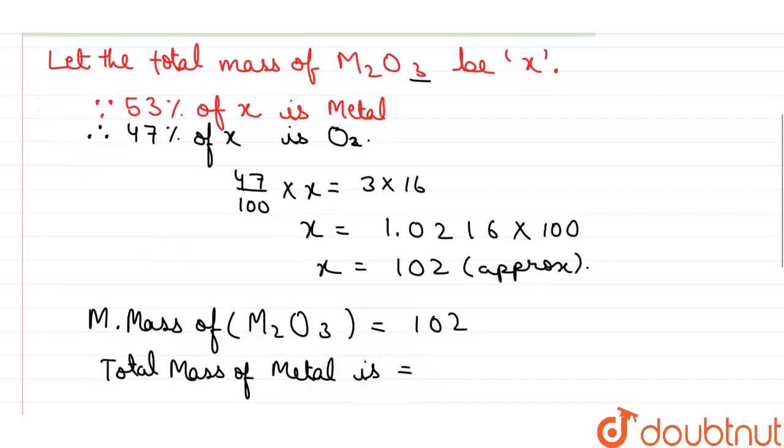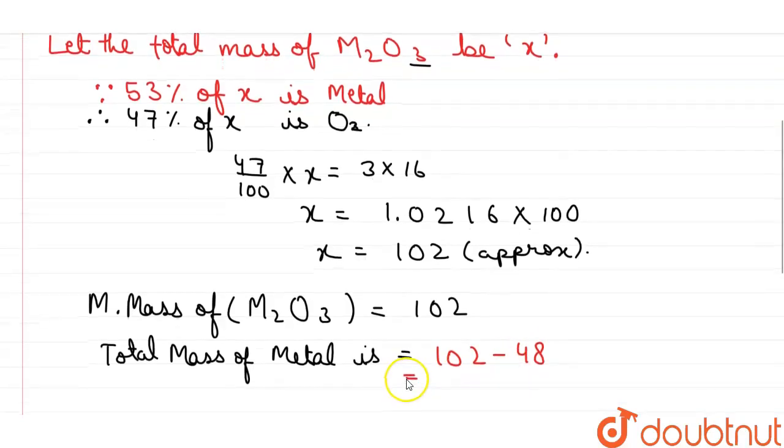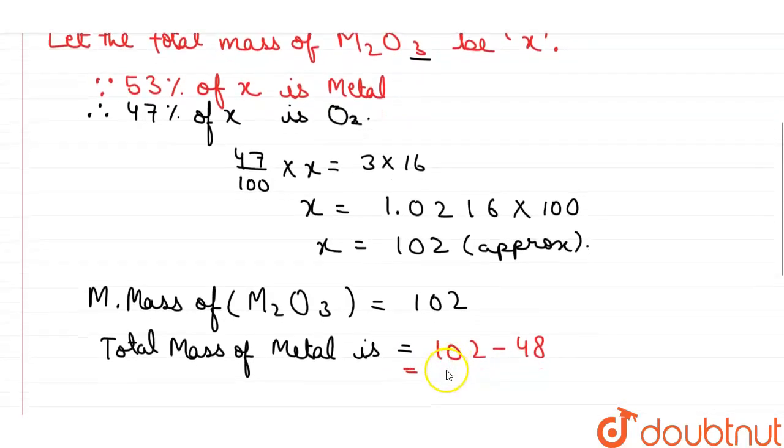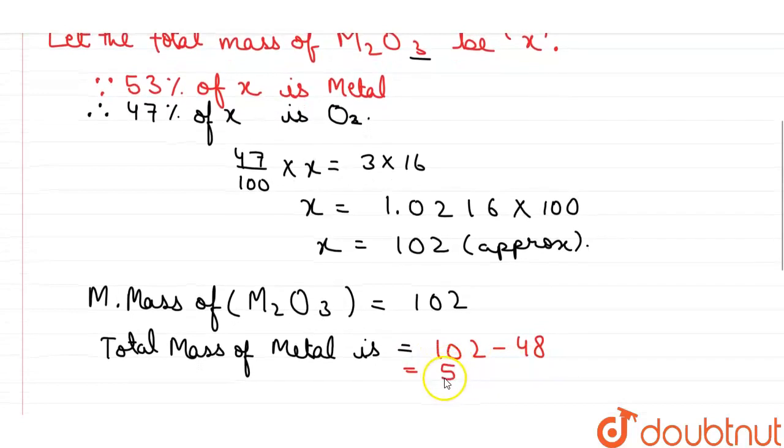The molecular mass of M2O3 is 102. Solving it further we get 54 for the total mass of metal.